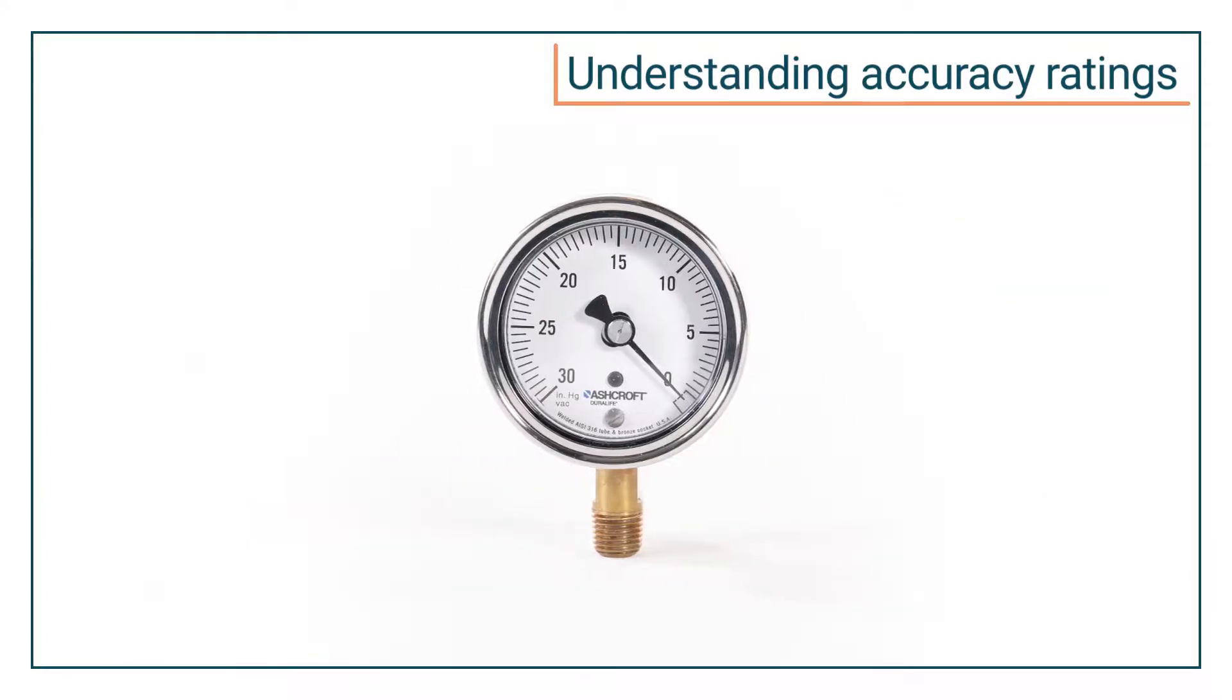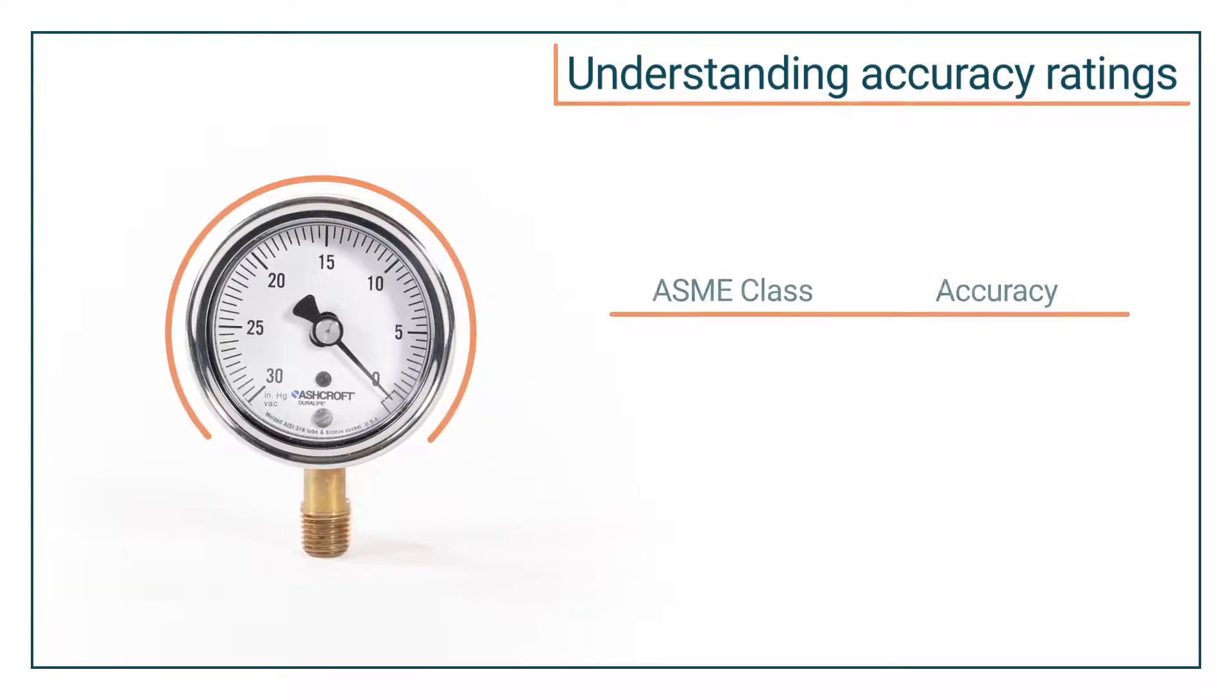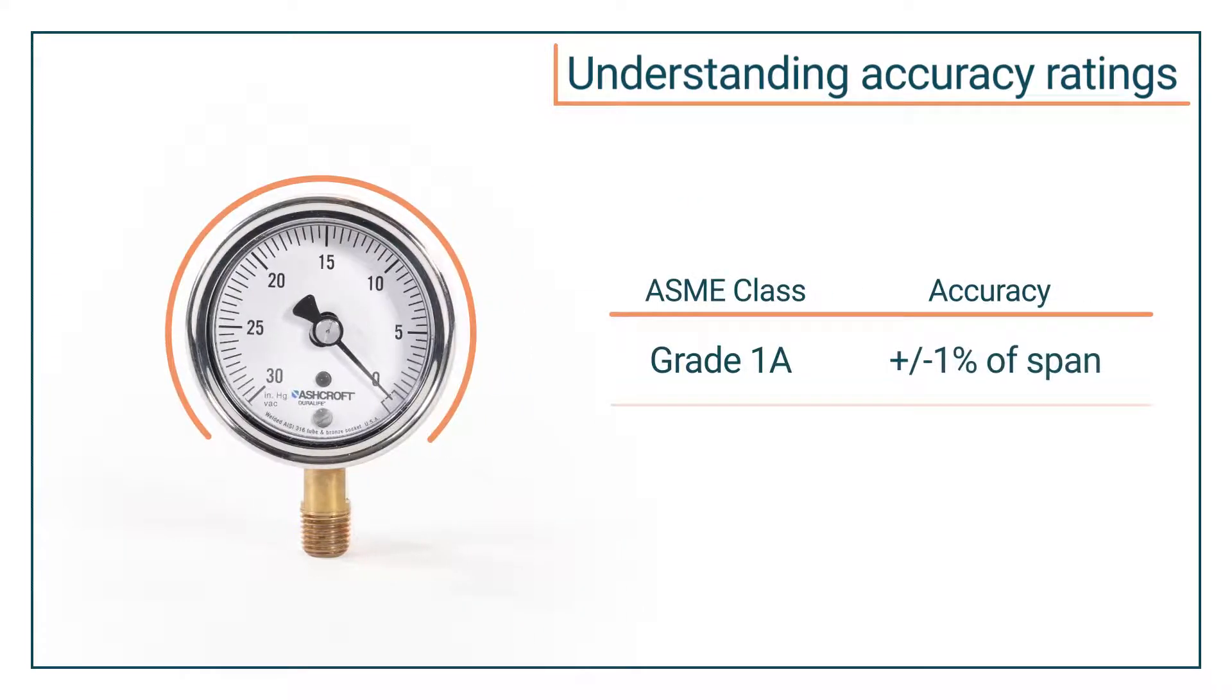Full range gauges will have a single number used to express accuracy across the entire span of the gauge. For example, plus or minus 1% means that the measurement will always fall within plus or minus 1% of the gauge's range.